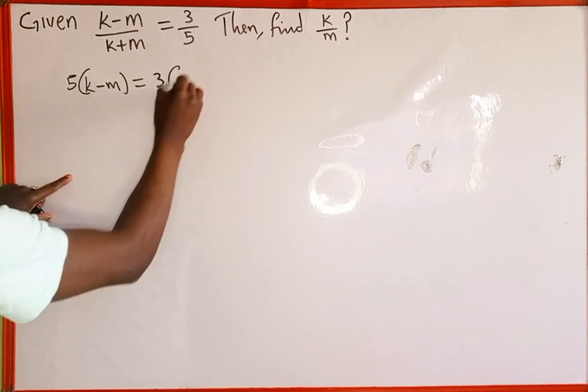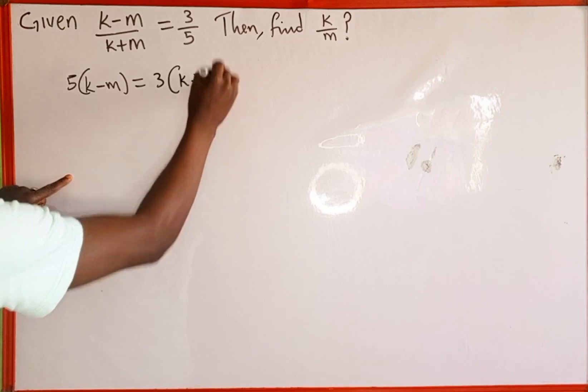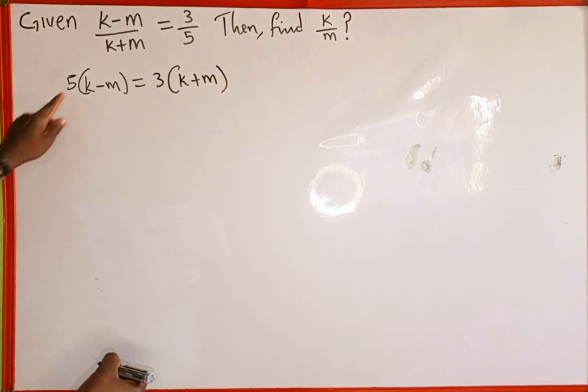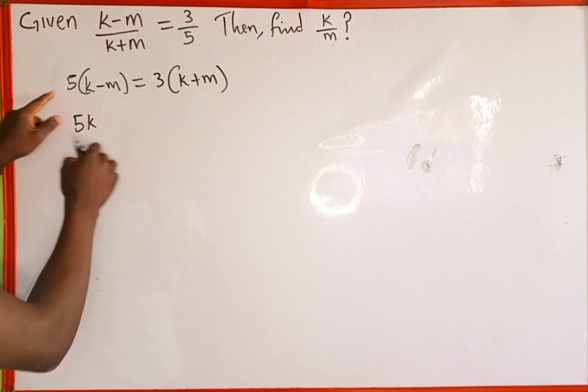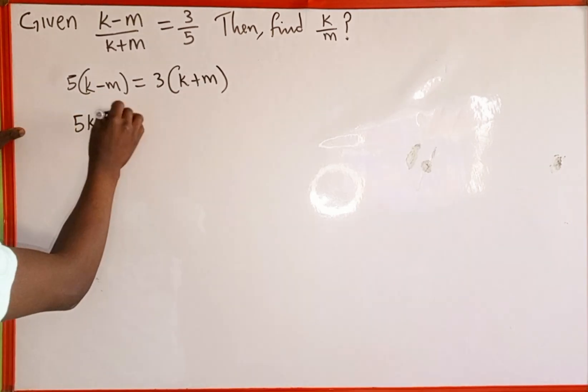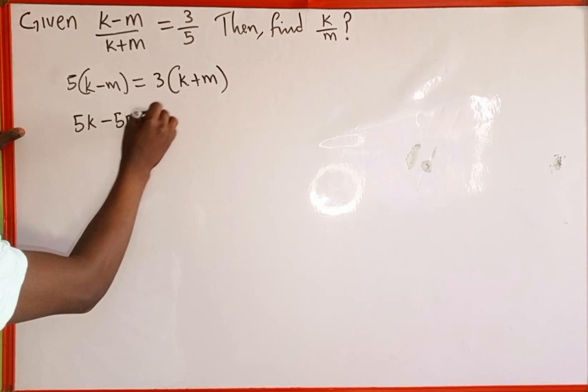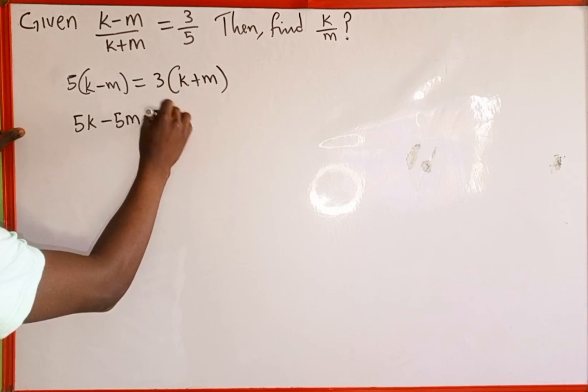Now we are going to open the bracket. 5 multiplied by k is going to give us 5k, then 5 multiplied by minus m is going to give us minus 5m, which is equal to 3 multiplied by k is 3k, then 3 multiplied by m is positive 3m.